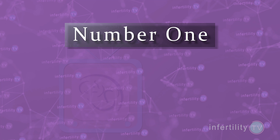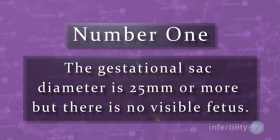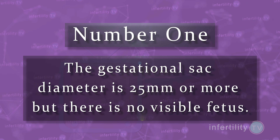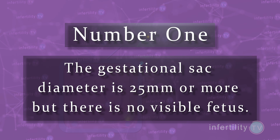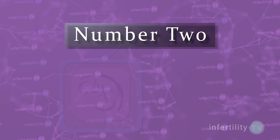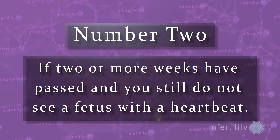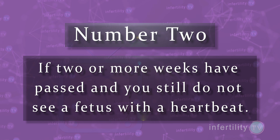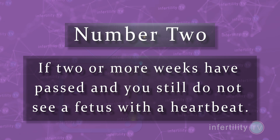We can divide ultrasound findings in early pregnancy into those that are suspicious that a miscarriage might occur and those findings that definitely mean that a pregnancy is no longer viable and will miscarry. There are four times when we can say a pregnancy is definitely not viable. Number one: you have measured the gestational sac diameter and it is 25 millimeters or more, but there is no fetus visible. Number two: if two or more weeks have passed since you saw an empty gestational sac and you still do not see a fetus with a heartbeat.